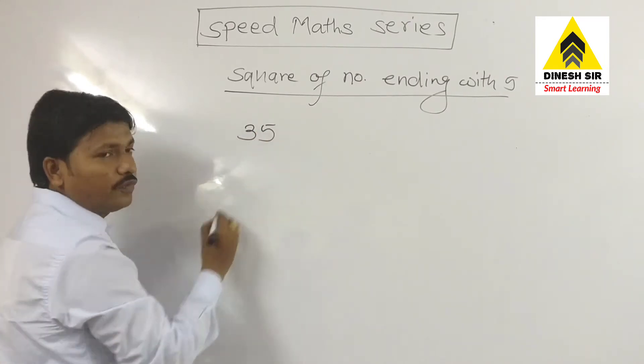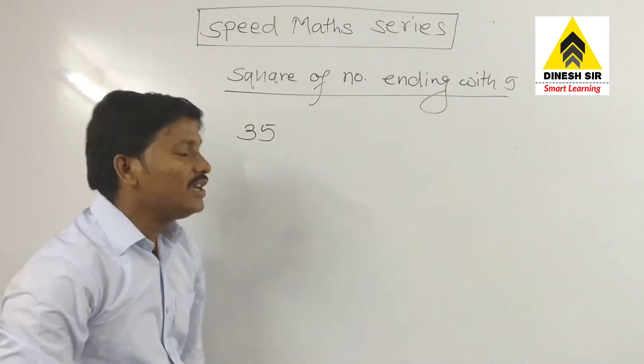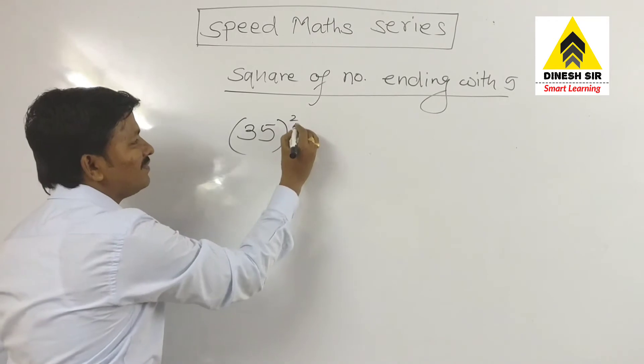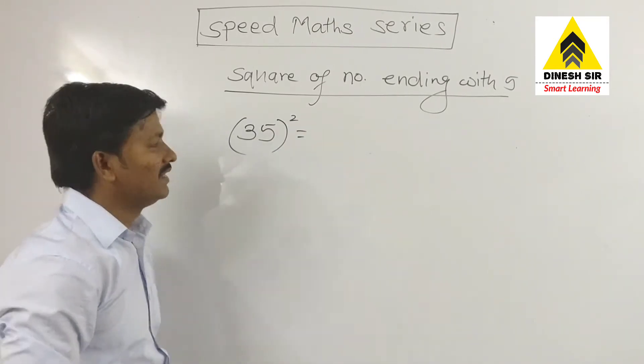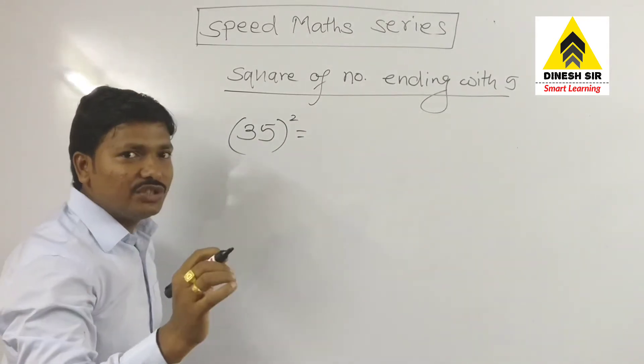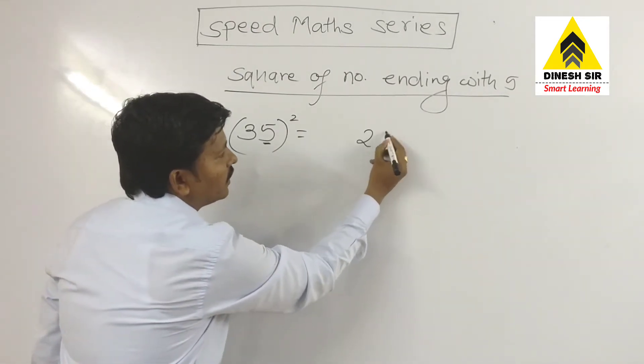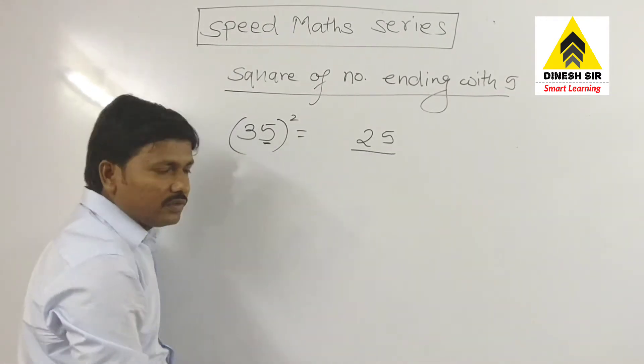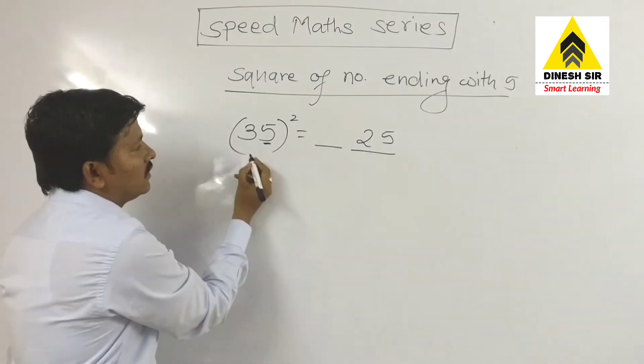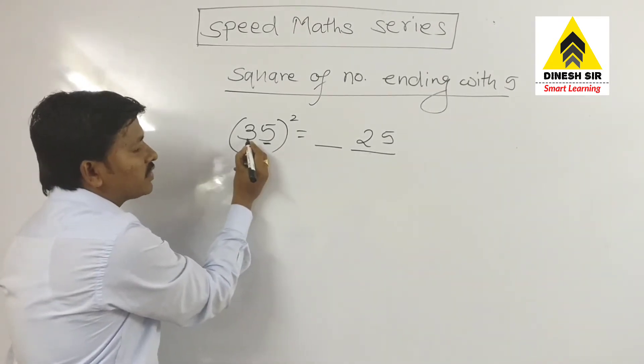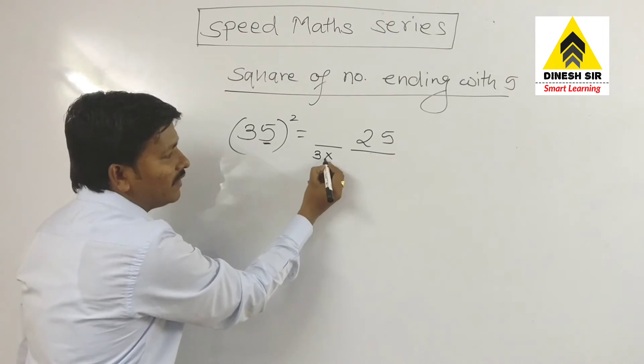If I have a number 35 and I want to take square of this number, then the very easiest method: square of 5 is 25, right here 25, and in first place take the first number 3 and multiply with the conjugate number, the next number. 3 times 4 is 12.